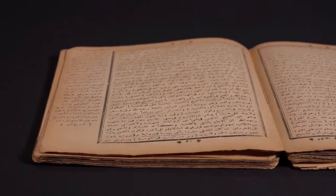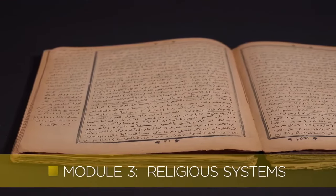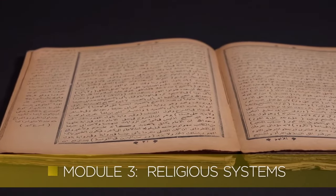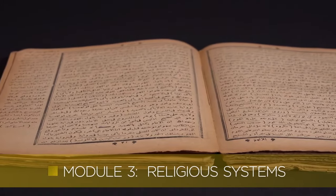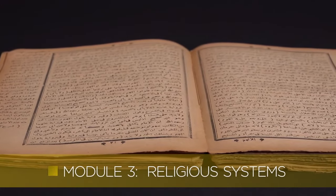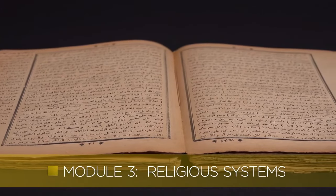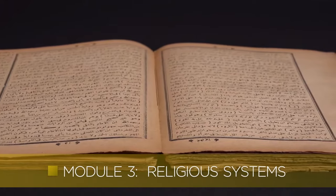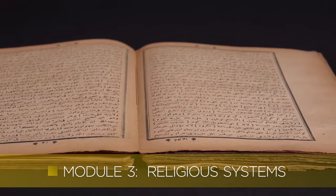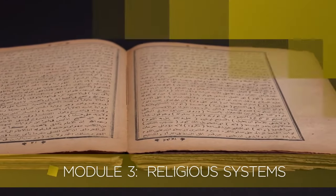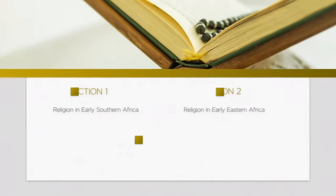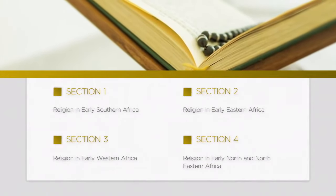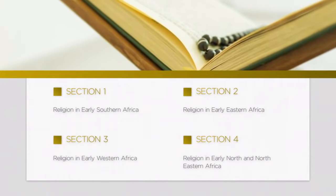Module 3: Religious Systems in Early Africa. This module is divided into four sections.